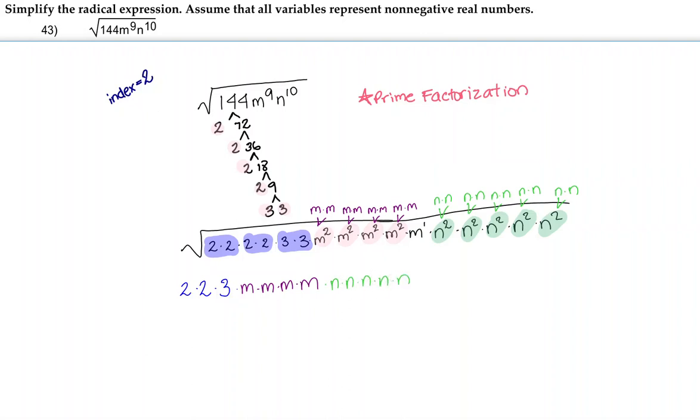On the inside of the radicand, we're still left with m to the 1st power, so we'll leave that. Then we're going to simplify all of this.